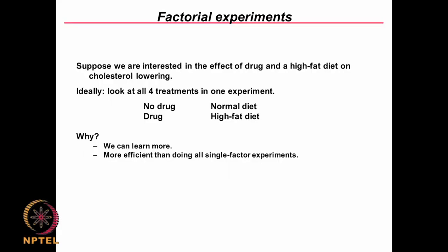I mentioned 2 parameters: one is the drug, the other is the diet, each at 2 levels. Drug has levels of no drug and drug; diet has normal diet and high fat diet. So we could conduct 4 experiments: no drug with normal diet, no drug with high fat diet, drug with normal diet, and drug with high fat diet. We have 2 parameters, 2 levels, 2 × 2 = 4 experiments.